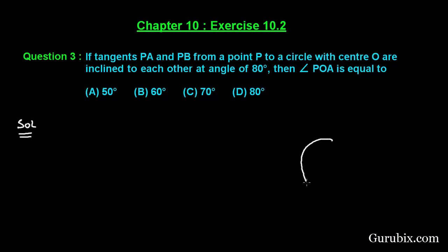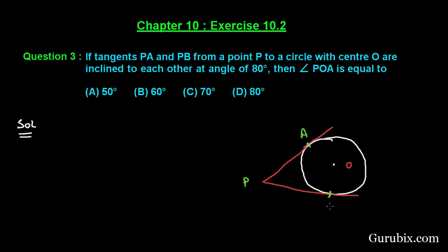First of all, let us draw the rough sketch of the figure using the information given in the question. Suppose this is the circle with center O, and here we have two tangents which touch the circle at A and B. These two tangents are inclined to each other at 80 degrees, so this angle is equal to 80 degrees.